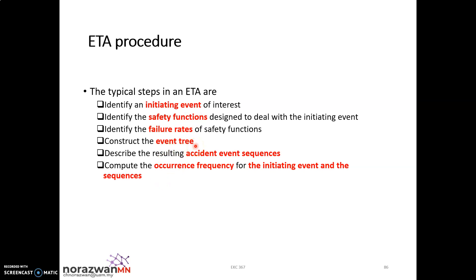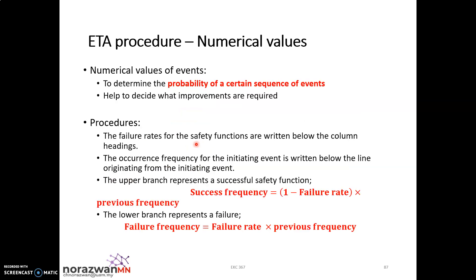For the ETA procedure, it will involve some numerical values. The numerical values for event tree analysis will help you determine the probability of a certain sequence of events — the probability of occurrence for such a failure. From this probability, it will help you decide what improvement or what type of modification is required by that process or plan.